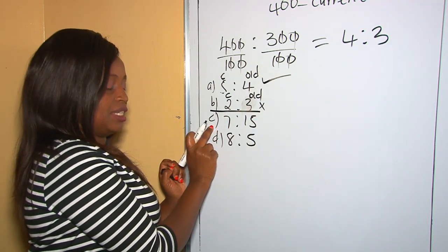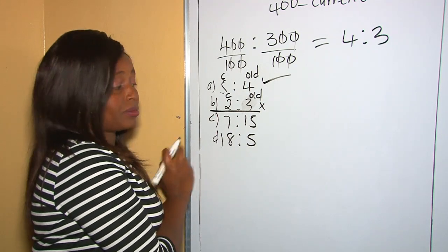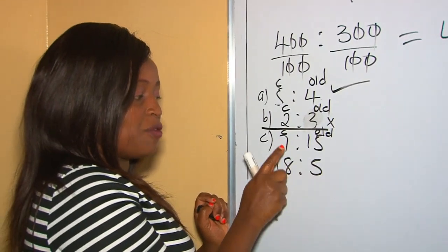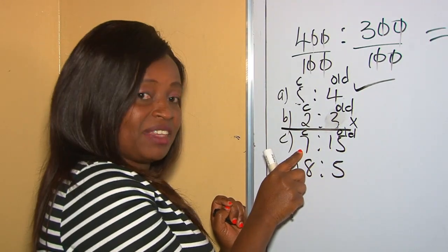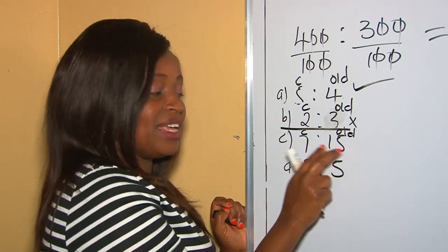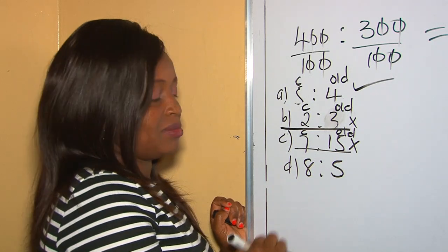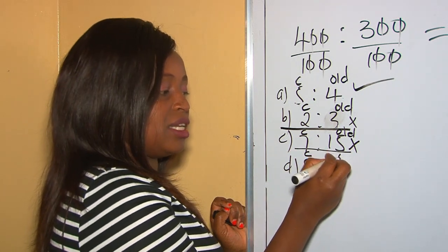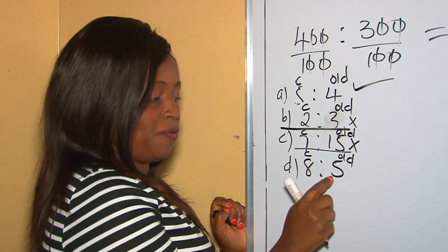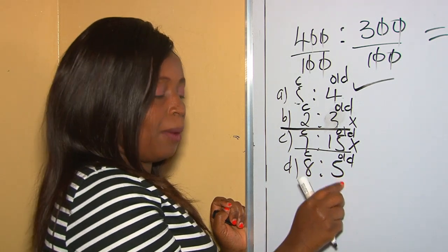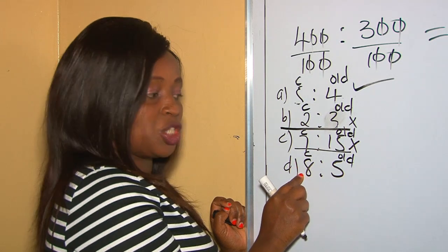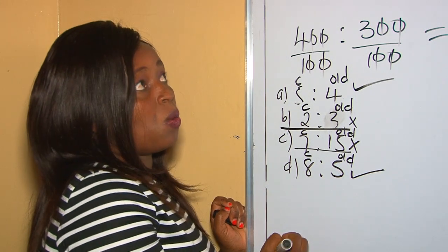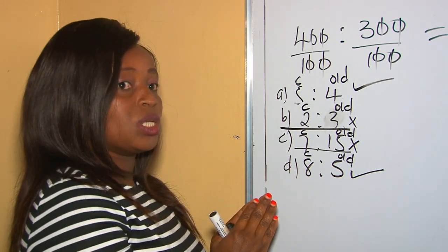For ratio C, 7 is to 15 — the current number is 7 and the old is 15. Since 7 is smaller than 15, there is no increment. For ratio D, comparing 8 and 5 — the current is 8 and the old is 5. Since 8 is bigger than 5, you are moving from a smaller to a bigger number, and therefore there is increment. So the ratios that show ratio increase are A and D.